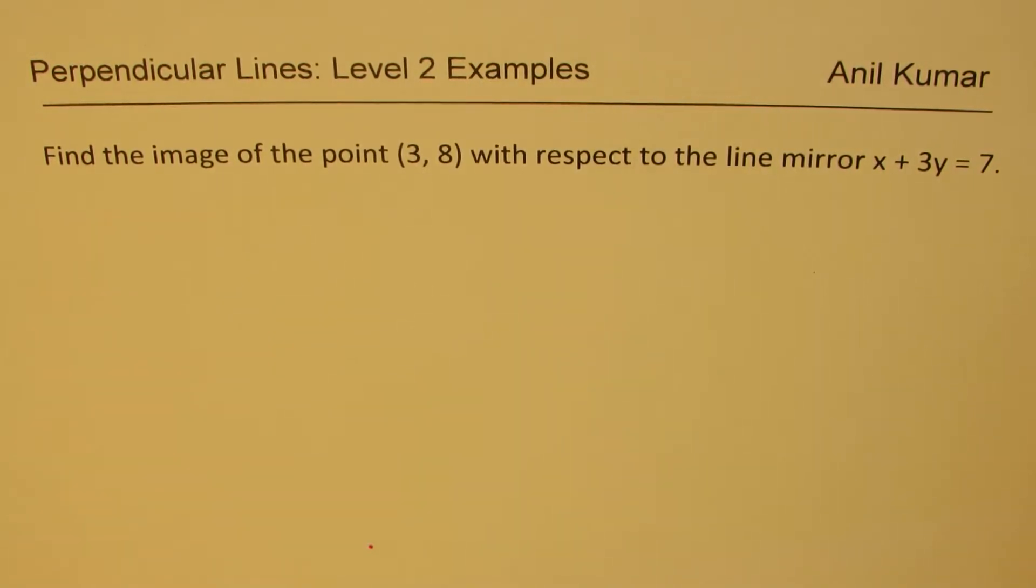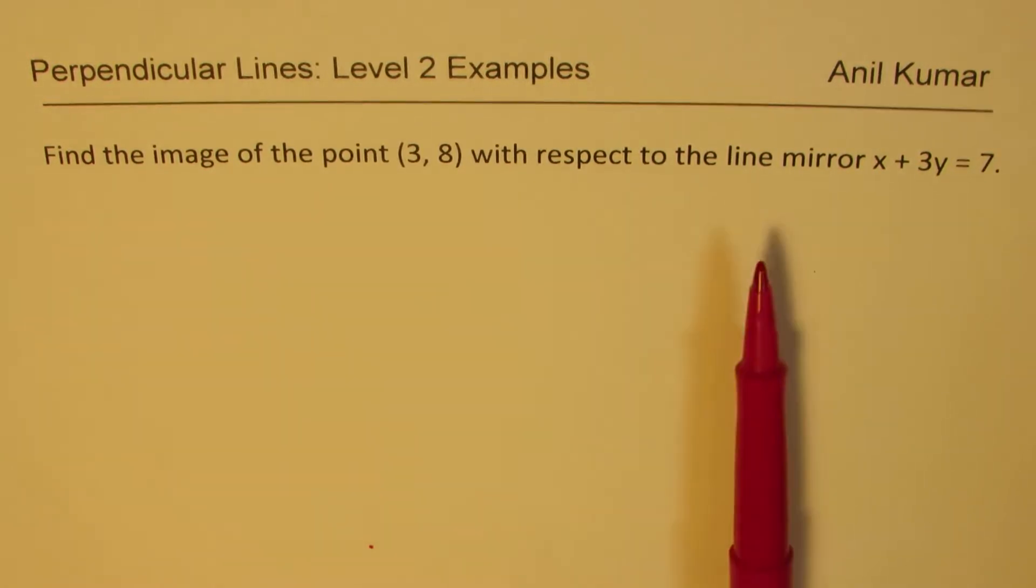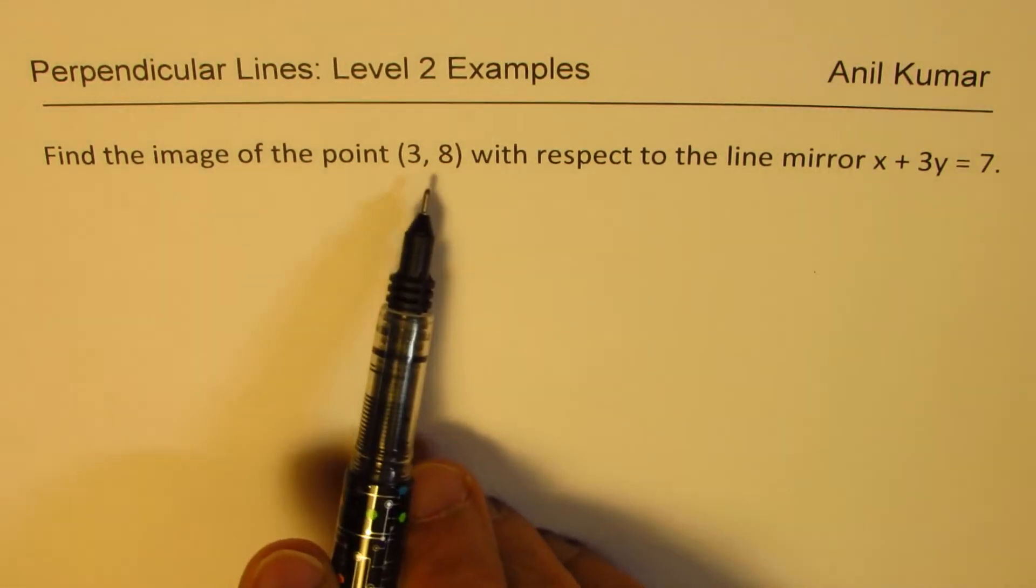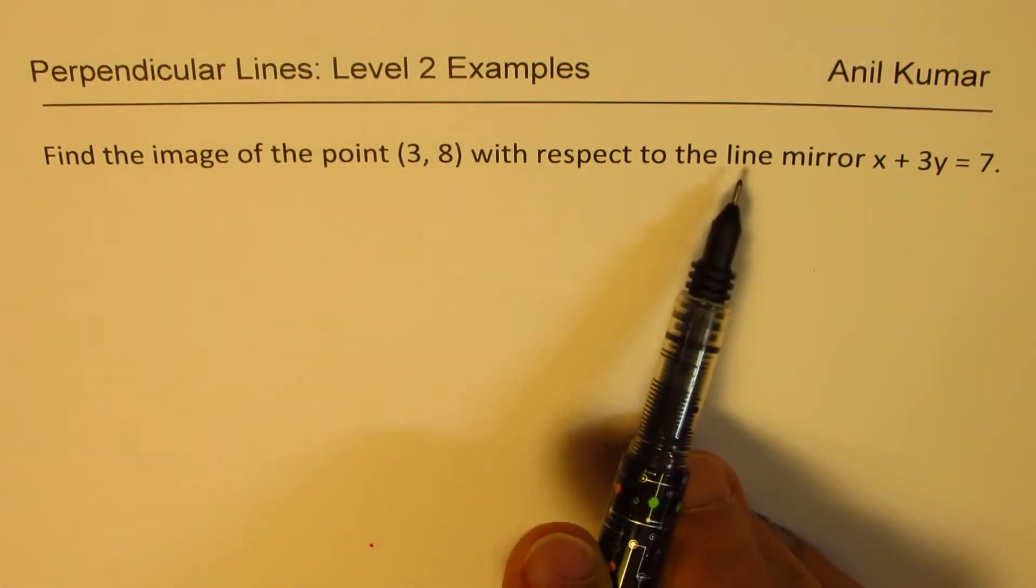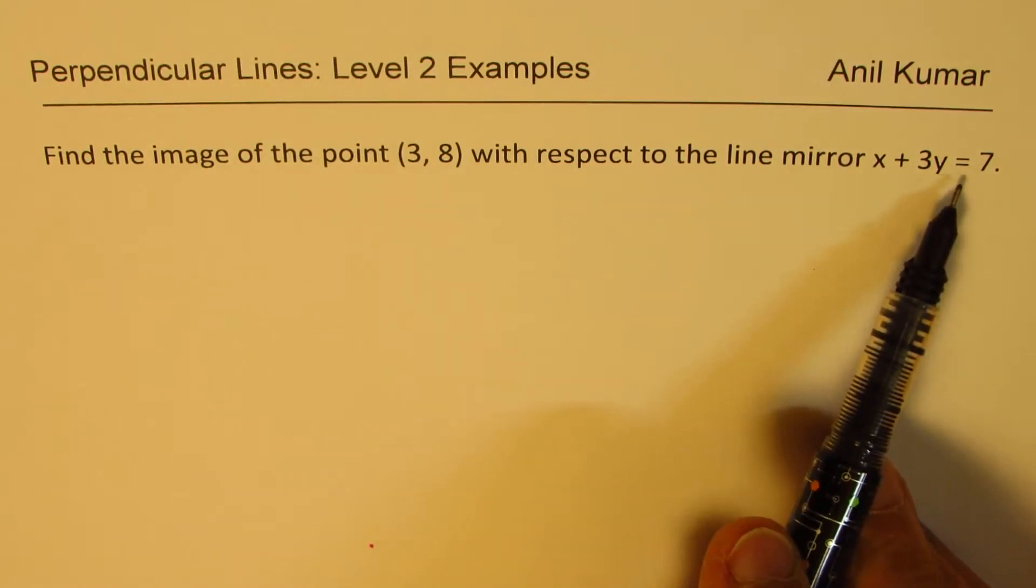Here is a question which is relating the image of a point when it is reflected on a line. The question before us is: find the image of the point (3, 8) with respect to the line mirror x + 3y = 7.